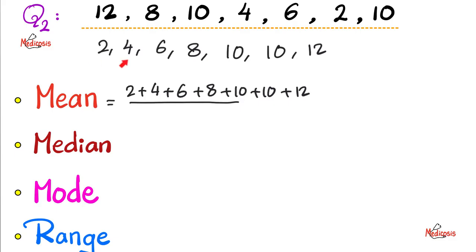And their number is 1, 2, 3, 4, 5, 6, 7. So, you divide all of this by 7.